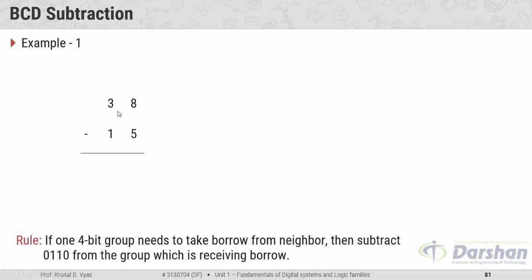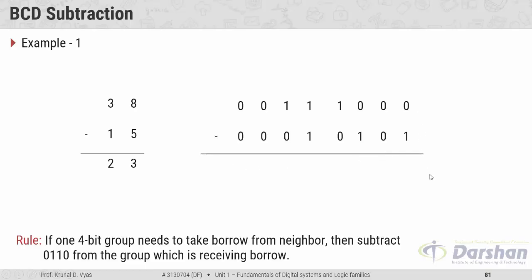We want to perform subtraction between 38 and 15. In a calculator you get 23 as the answer. First convert 38 and 15 into BCD code. Using binary subtraction, we get 0010 and 0011 as the result. Checking the rule: this group does not need any borrow from its neighboring group, because 1000 (decimal 8) is greater than 0101 (decimal 5). So the final answer remains 0010 and 0011, which is 23 in decimal.